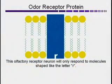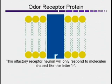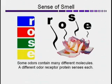Embedded in the lipid bilayer membranes of these dendrites are what are known as odor receptor proteins. I've shown an odor receptor protein in blue here, and it has a cutout of the shape of the letter R in it. So this protein will only respond to molecules shaped like the letter R. Many odors are composed of many different types of molecules. I've shown the scent from a rose here as being made up of R-, O-, S-, and E-shaped molecules.